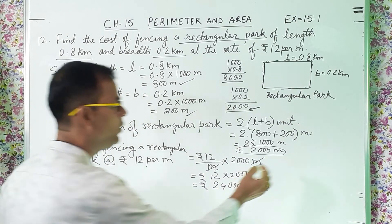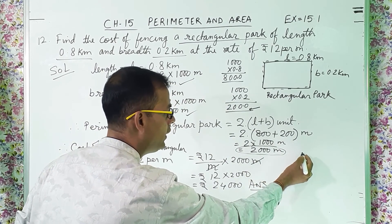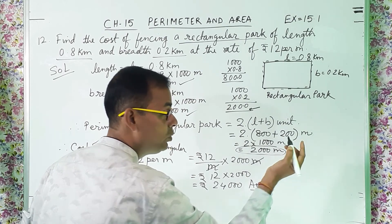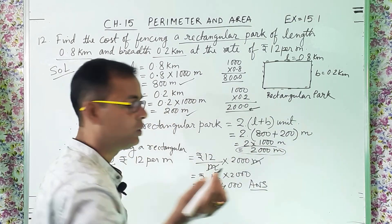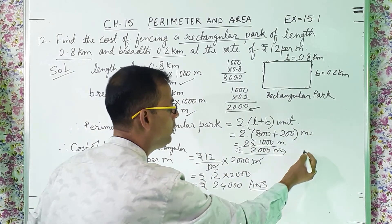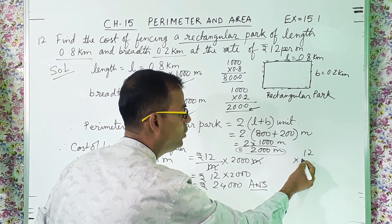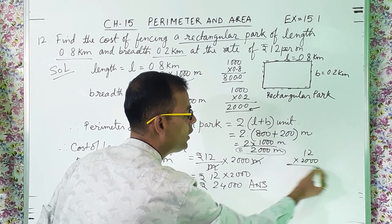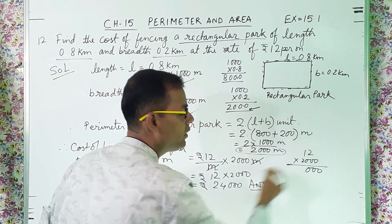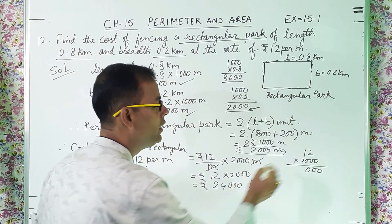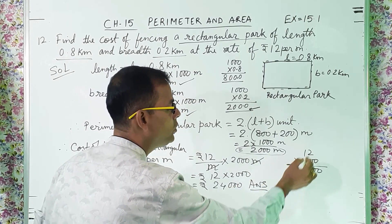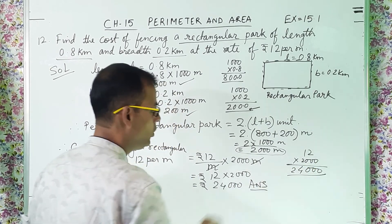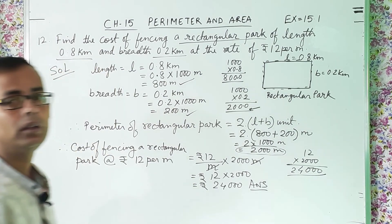For those who cannot multiply directly, here is a shortcut for 12 into 2000: 2000 has 3 zeros, so put 3 zeros down. Then multiply 2 into 2 is 4, and 2 ones are 2, giving 24,000.